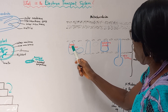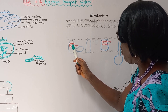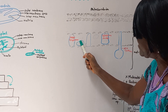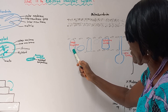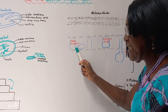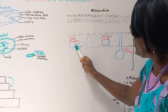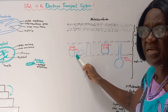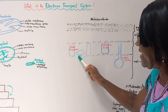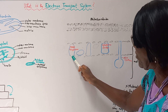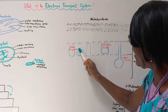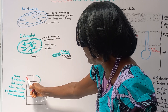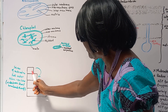These molecules undergo redox reactions where molecules gain electrons to become reduced, and give off electrons to become oxidized. In the process, energy is released to form ATP.